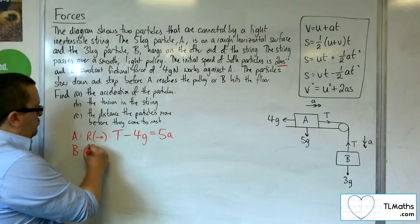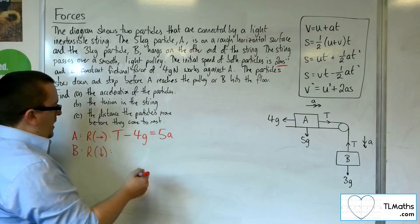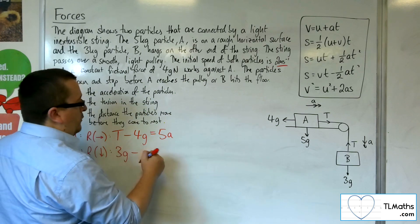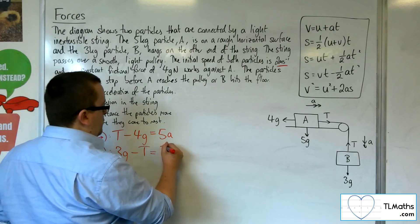Now for particle B, I'm going to resolve taking downwards as positive. So I've got the 3G. I've got the tension working against me. And that's got to be equal to the mass times the acceleration, so 3A.